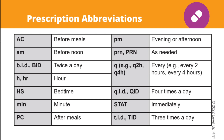Now let's go over prescription abbreviations that deal with frequency. AC means before meals. AM means before noon. BID means twice a day. H or HR means hour. HS means bedtime (hours of sleep). MIN means minute. PC means after meals. PM means evening or afternoon. PRN means as needed. Q means every — so Q2H means every two hours, Q4H means every four hours. QID means four times a day. STAT means immediately. And TID means three times a day.